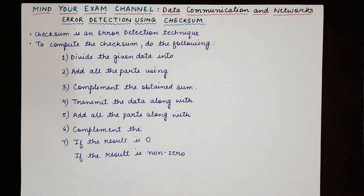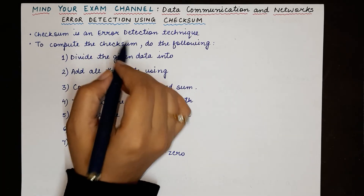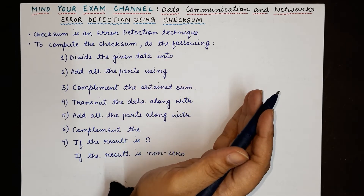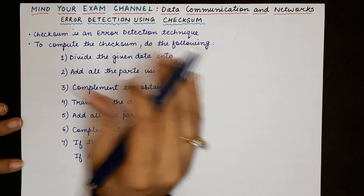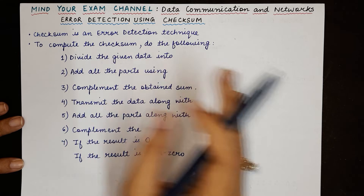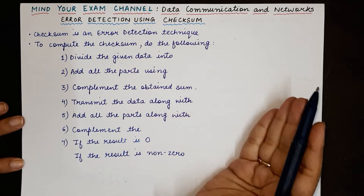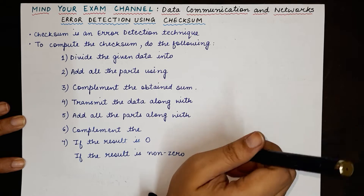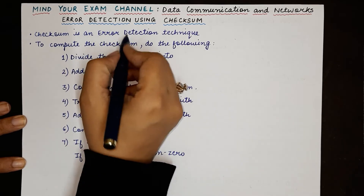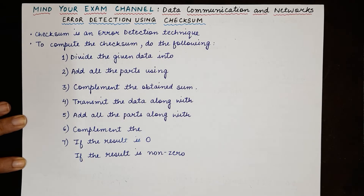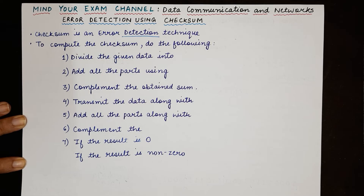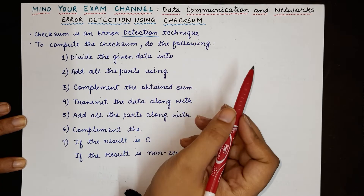So what exactly is a checksum? A checksum is one of the error detection techniques and it can be used to find out whether the code or the data that is being transmitted has some error or not. It will not be able to correct any kind of error, but it will only be able to perform detection of an error — whether some changes have occurred during the transmission from the sender to the receiver.